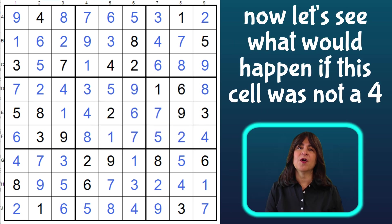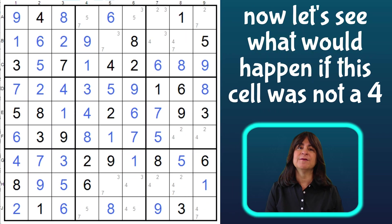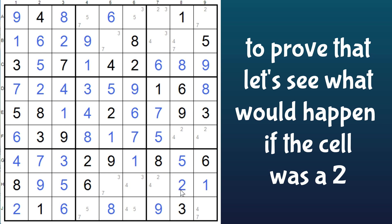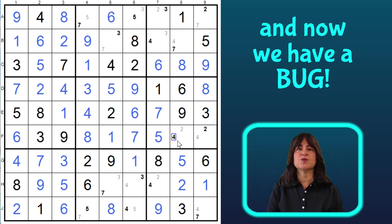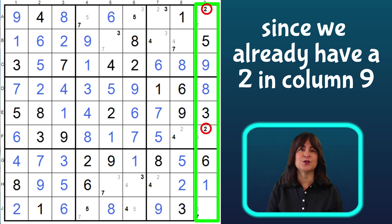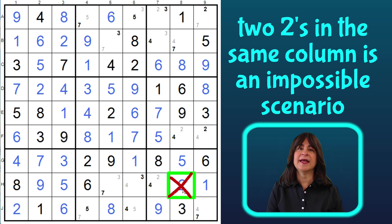Now let's go back to the puzzle before I solved it with the four, and see what would happen if this cell was either a two or a seven — the puzzle would have either more than one solution or no solution. To prove that, let's say this cell was a two. Then this cell would be a four, this cell would be a three, then this cell would be a seven, and this cell would be a five, making this a four, and this a seven, making this a two, so this is a three, this is a five, this is a seven, this is a three, this is a four, this is a seven, and now this is a four, making this a two — but that doesn't make any sense because we already have a two up here. You can't have two twos in the same column, so this is not a possible solution. Therefore the first cell can't be a two.